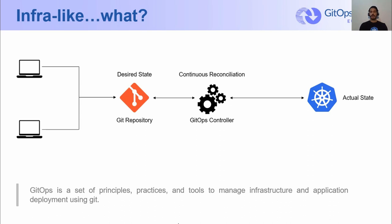Basically, GitOps in the context of Kubernetes aims to address the challenge of how do we ensure that our Kubernetes cluster reflects the declarative configuration we have in Git, also known as the desired state. This can be achieved with the help of GitOps controllers, such as Argo CD, Flux, and Rancher Fleet.